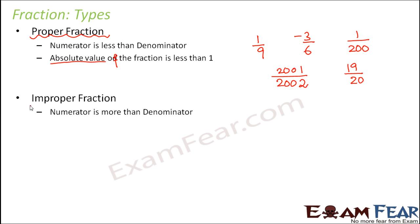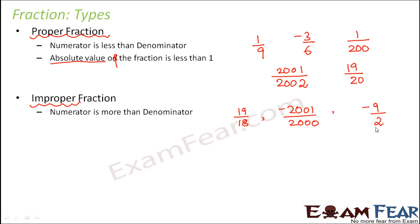Now can you guess what an improper fraction would be? It is just the reverse of a proper fraction — here the numerator is more than the denominator. Examples include 19/18, minus 2001/2000, or minus 9/2. These are all improper fractions because the numerator — the number on top — is bigger than the number below.